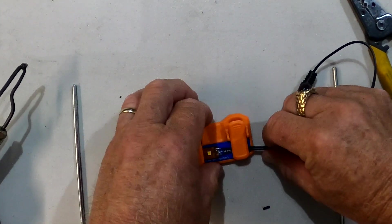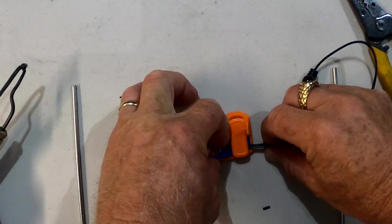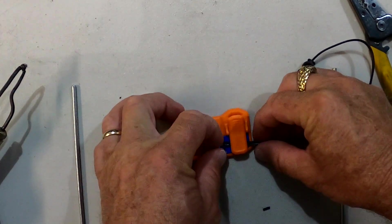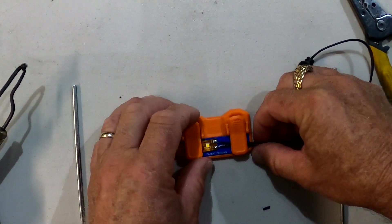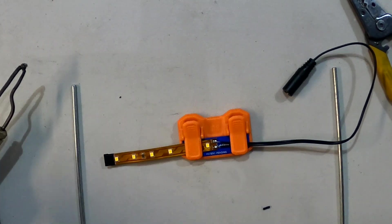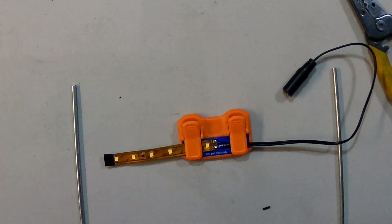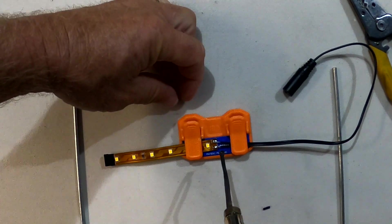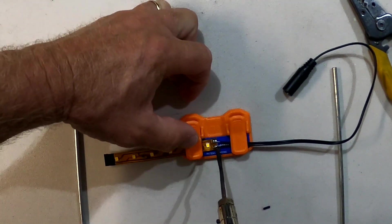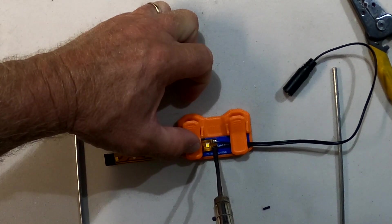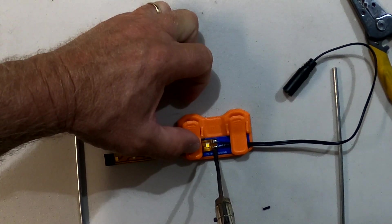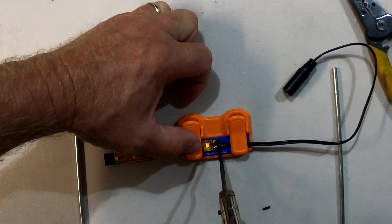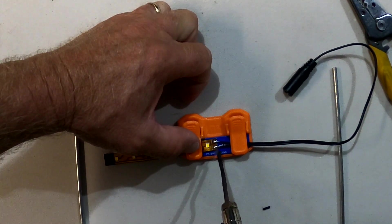Clamp it into the Solder Mate, and this is where this little tool shines - imagine trying to hold all this together with your hands and solder using your hands. Now all we got to do is get the iron hot and just hold it on until you see the solder all flow together.